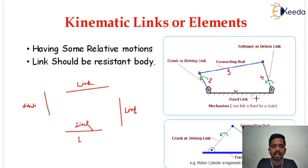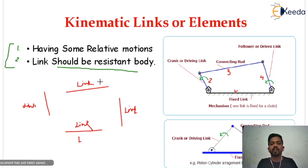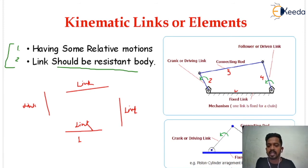The second criteria is that the link should be a resistant body. You must remember these two conditions — first, relative motion, and second, the link should be a resistant body. See this second diagram: this is the slider, this is the connecting rod, and this is the crank, which is going to rotate.